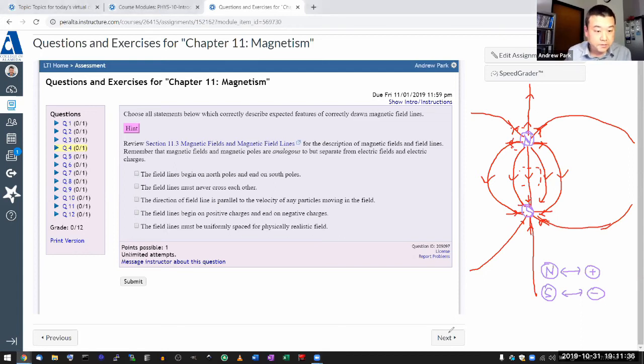It says the field lines begin on north poles and end on south poles. Yeah, that's the analogous part. So that's how they should be. The field lines must never cross each other.